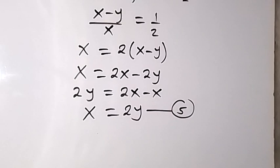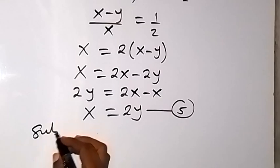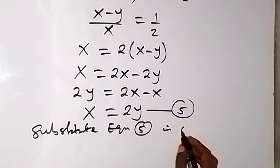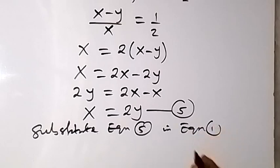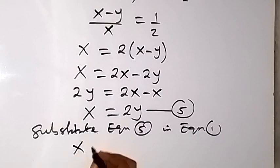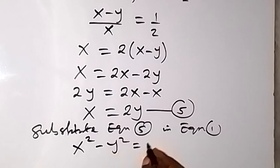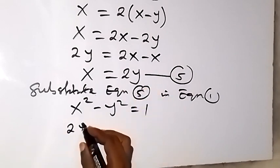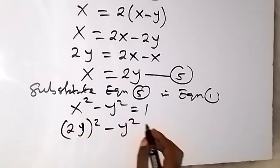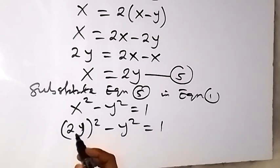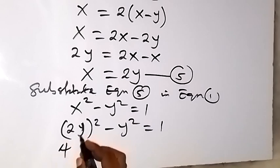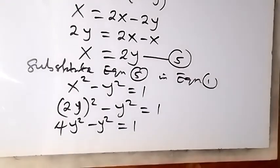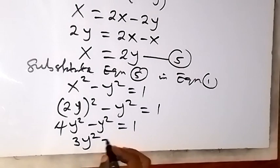The next step, let's substitute equation 5 into equation 1. Equation 1 gives us x squared minus y squared equals to 1. So instead of x, we write 2y, giving us 2y squared minus y squared equals to 1. When we expand, we get 4y squared minus y squared equals to 1, so 4y squared minus y squared gives us 3y squared, which equals to 1.